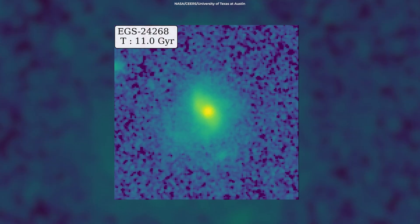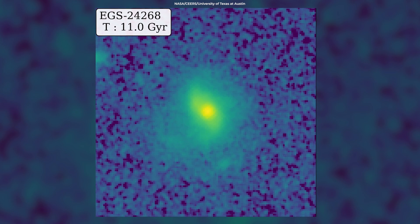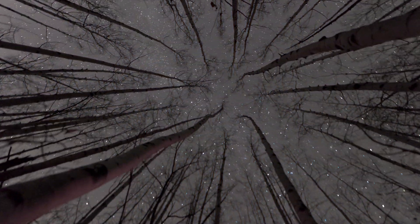The team spotted another barred galaxy, EGS 24268, also from about 11 billion years ago. The two barred galaxies exist farther back in time than any previously found.